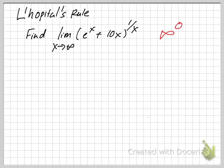The trick is to let y = (e^x + 10x)^(1/x). Since the power 1/x is hard to deal with, you want to move it down by taking the natural log of both sides.